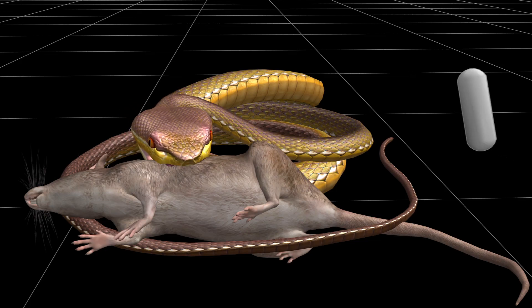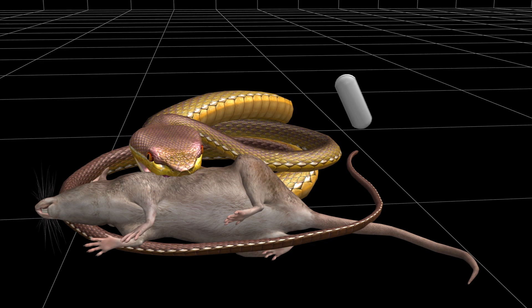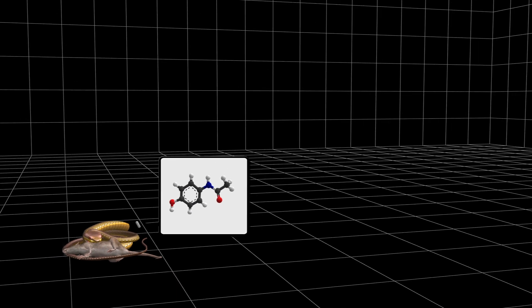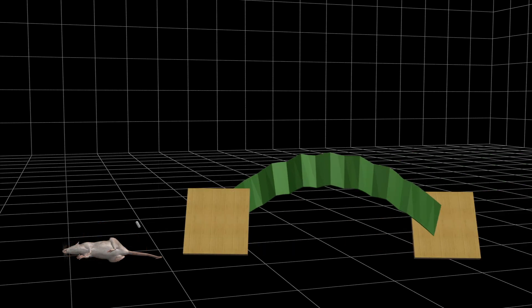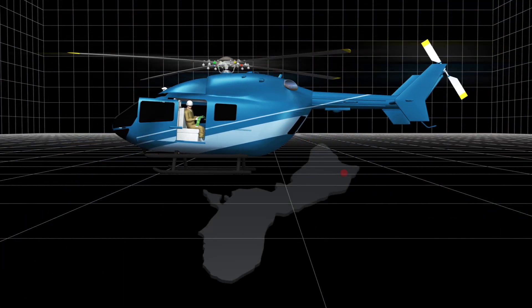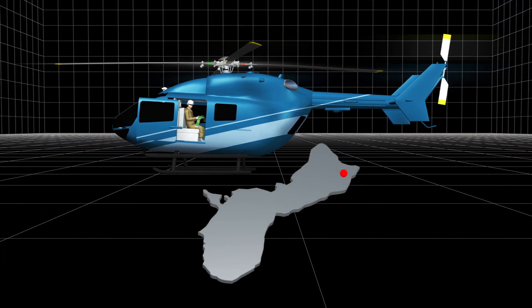Unlike many snakes, brown tree snakes eat prey they did not kill themselves and are vulnerable to acetaminophen. Taking advantage of these two weaknesses, scientists decided to airdrop dead mice laced with acetaminophen and attach them to streamers in areas near Guam's sprawling Anderson Air Force Base.